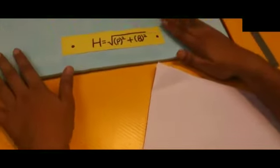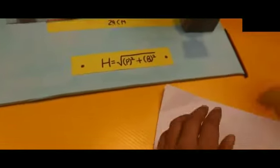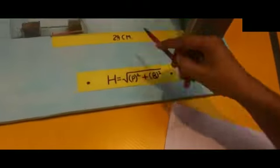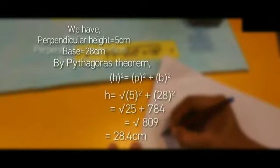Now by doing some calculations, we will be testing the working of this model. First, we will be measuring the height and the height is initially 5 cm. The base we know is 28 cm. We have perpendicular distance 5 cm and base 28 cm. Now by Pythagoras theorem, we get the hypotenuse equal to 28.4 cm.